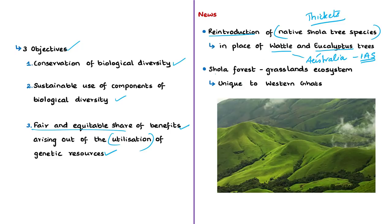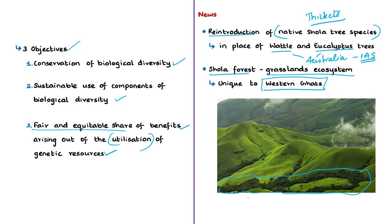The term 'shola' refers to the shola forest-grassland ecosystem, which is unique to the Western Ghats. It is characterized by patches of stunted evergreen shola trees in valleys and grasslands on the hill slopes in the higher reaches of the Western Ghats. This forest-grassland ecosystem is in great danger because of invasive alien species — in this case the wattle and eucalyptus trees.